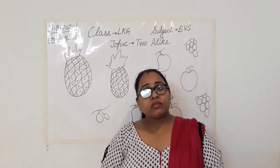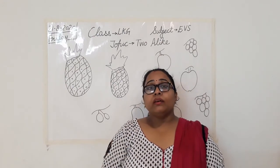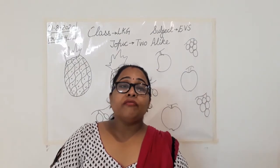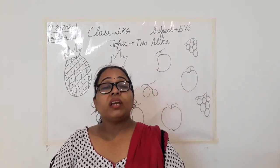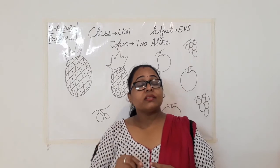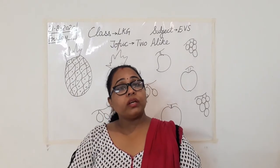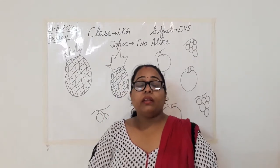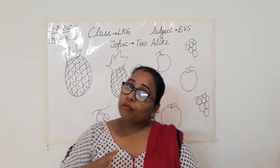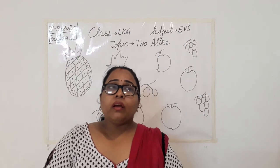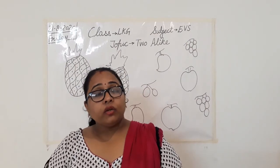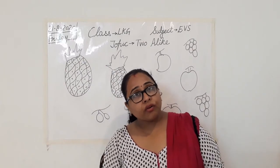We learned about fruits that have one seed, some fruits that have many seeds, then some fruits which we eat with their peel, and some fruits whose peel we remove. I also told you about different colors and taste — you have learned about the taste and color of fruits.